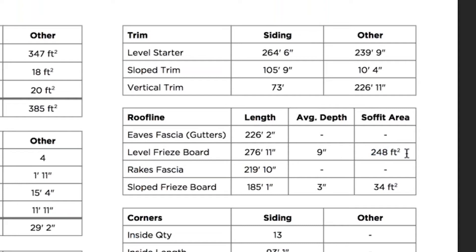We are telling you that there are 248 square feet of soffit area on the level soffits. We then provide the rake fascia information, and finally the slope frieze board, which is where the rake edge essentially overhangs. Here we're providing 185 linear feet of slope frieze board, where the top of the wall meets the soffit on the rake edges. The average depth here is 3 inches, taken into consideration every rake edge on the structure and averaged out. We are telling you that a total of 34 square feet of soffit exists on the rake overhang.